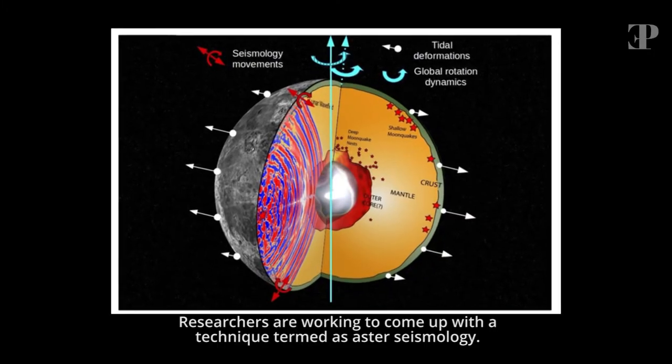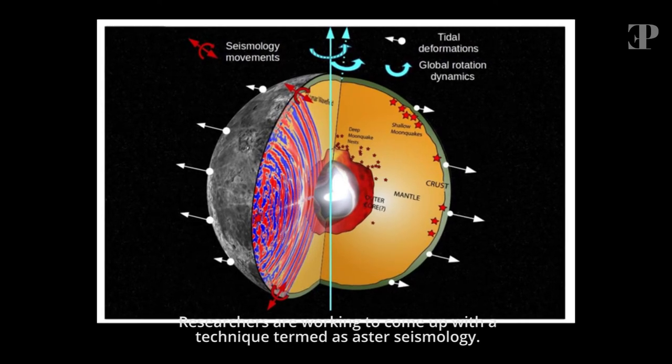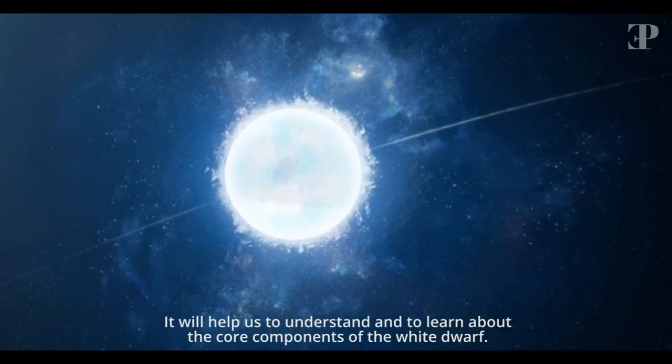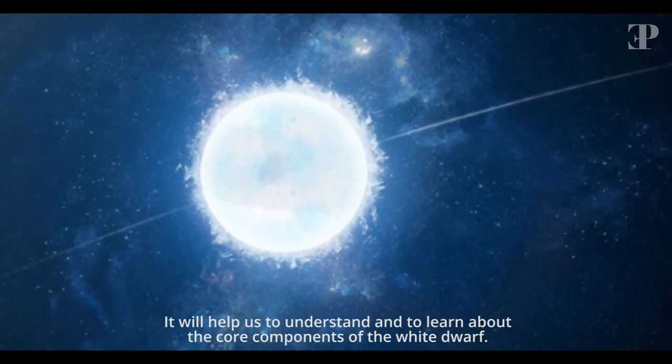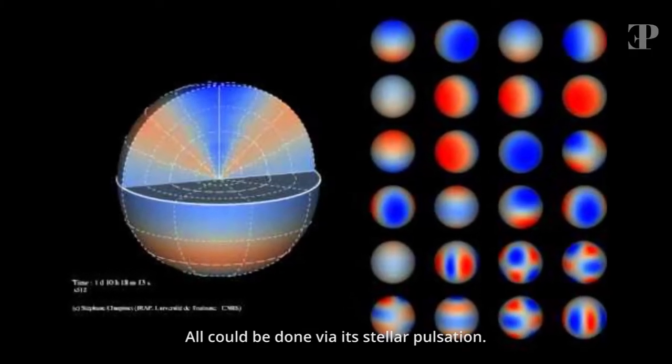Researchers are working to come up with a technique termed as asteroseismology. It will help us to understand and to learn about the core components of the white dwarf. All could be done via stellar pulsation.